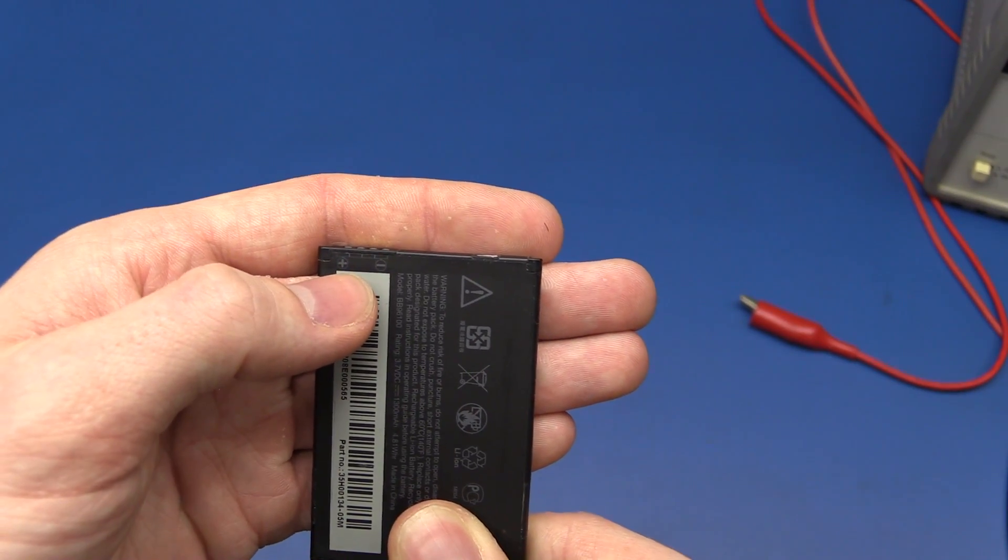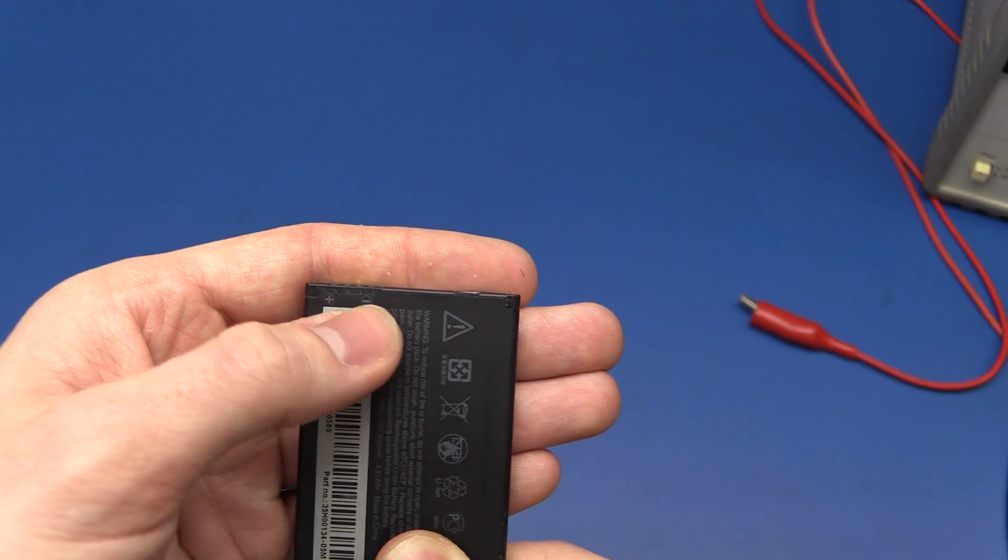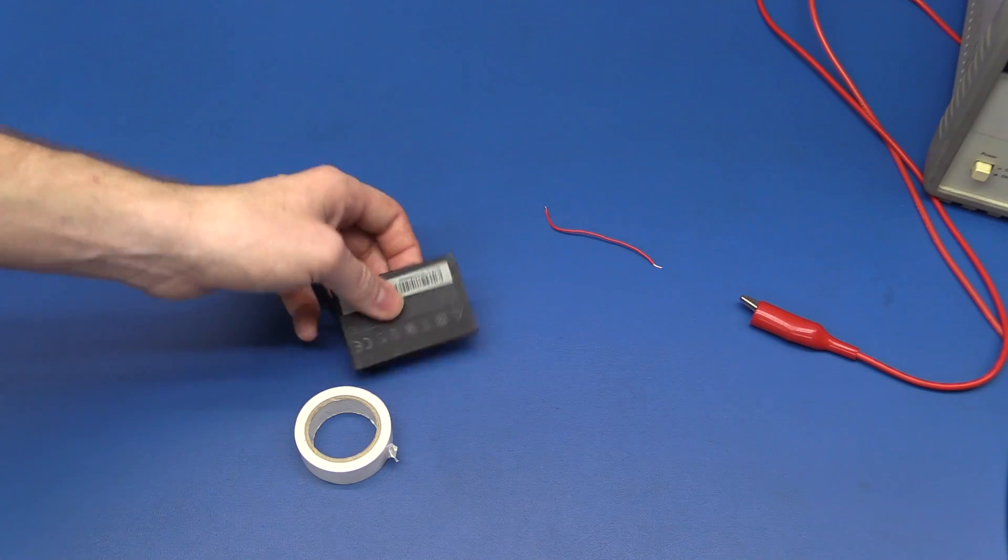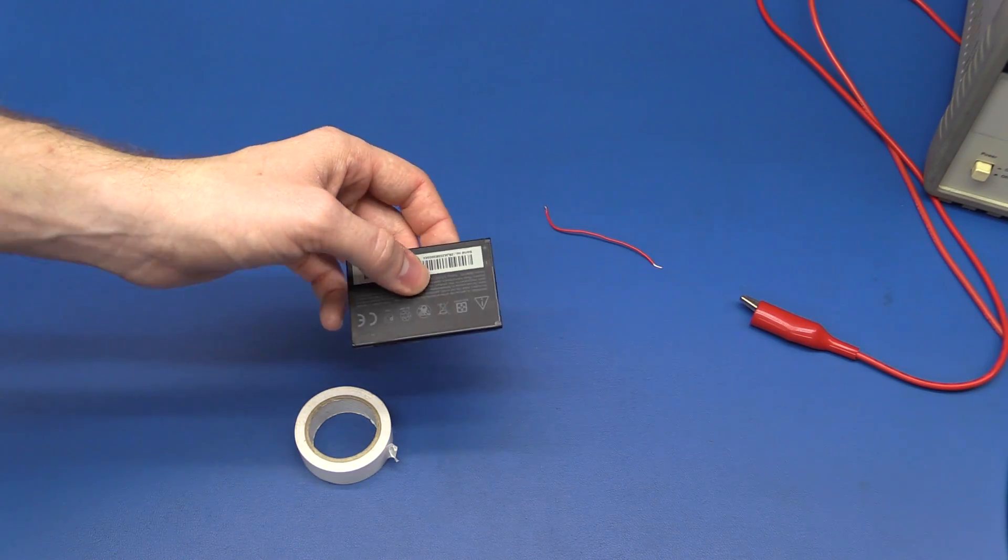And if we look at the battery, usually they put the polarity on the sticker or the case or something. Otherwise, you can just measure it with a multimeter.